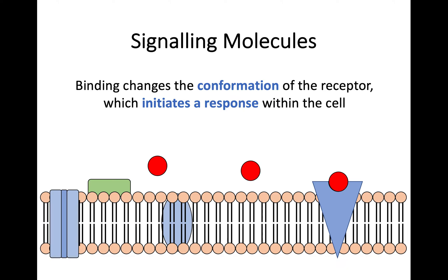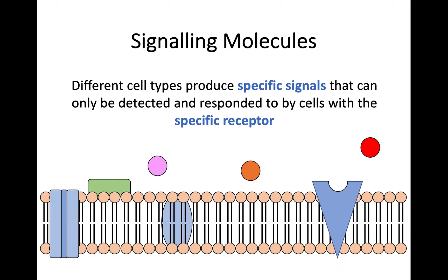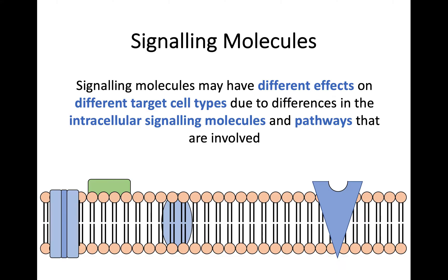We'll go into more detail in the rest of the area about all the different responses that can take place. Different cell types are able to produce specific signals that are only going to be detected and therefore responded to by cells with that specific receptor. That goes back to complementary receptor proteins from National 5 biology, where a specific signal binds to a specific receptor. These signaling molecules may have different effects on different target cell types, because of differences in their intracellular signaling molecules or pathways involved.